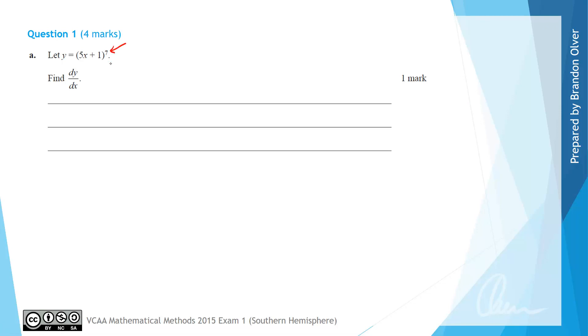If we inspect this rule we can see that it's a function, 5x plus 1, inside another function. So we're going to use the chain rule.